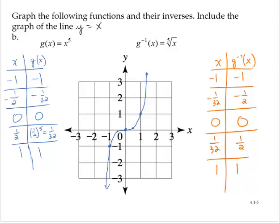So I have negative 1, negative 1, negative 1/32, negative 1/2. So that would be about here. I've got 0, 0, and then 1/32, 1/2. And remembering, if we sort of think about that line y equals x.